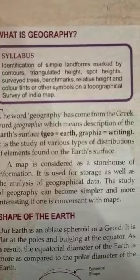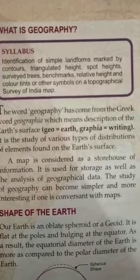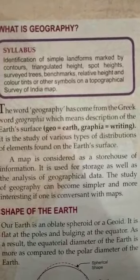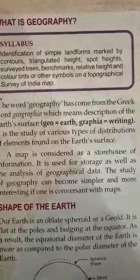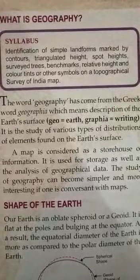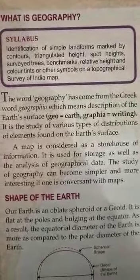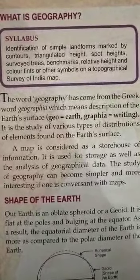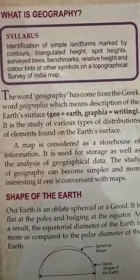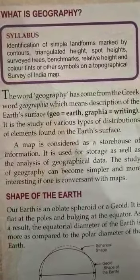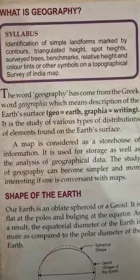As you know, how do we define geography? Geography has come from the Greek word 'geographia,' which means the description of the earth's surface. 'Geo' means earth and 'graphia' means writing. We study various types of distributions of elements found on the earth's surface.